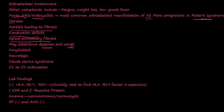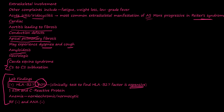You can have difficulty breathing and coughing, amyloidosis, and neurological problems. Cauda equina syndrome — compression of the sacral nerves — can occur, as well as C1-C2 subluxation, which is a partial dislocation. Lab findings: positive for HLA-B27 in about 90% of cases — it's a great test but expensive. There's increased ESR and C-reactive protein, normochromic normocytic anemia, and both RF factor and ANA (anti-nuclear antibodies) are negative.